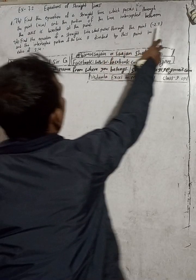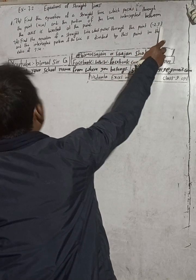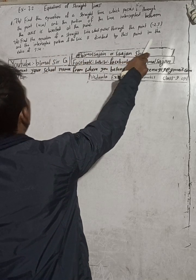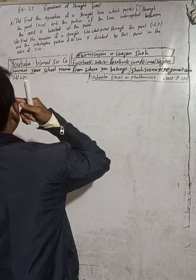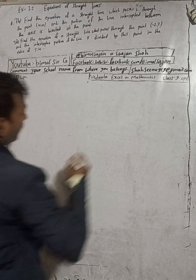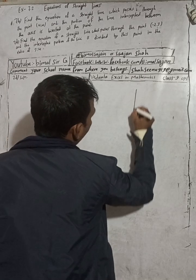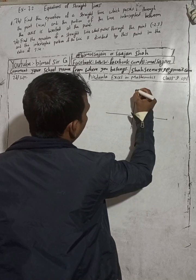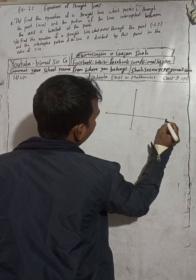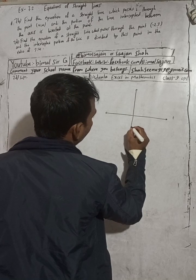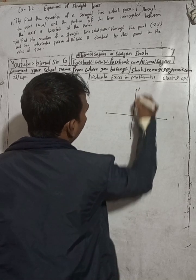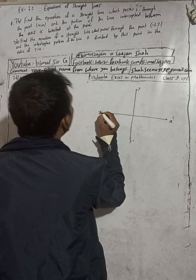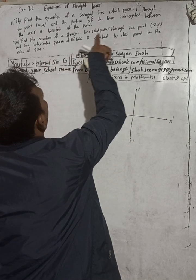Which passes through the point minus 2 comma 3, and the intercepted portion of the line is divided by this point in the ratio 3 to 4. So here we first consider our figure. This is our y-axis and this is the x-axis.